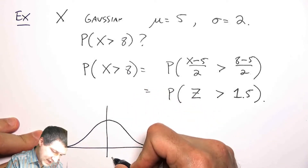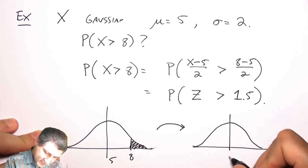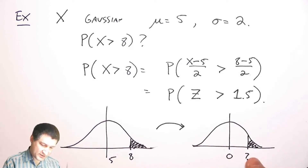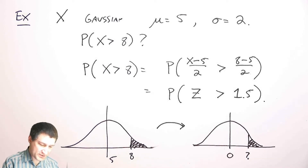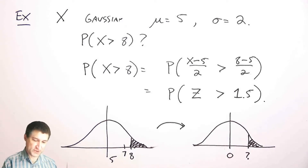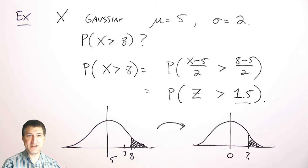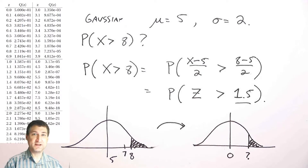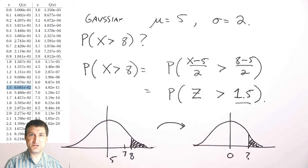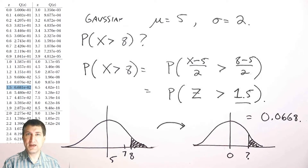It's handy to draw a little picture of what I'm looking for. Here's a Gaussian, and the original problem is how much is left in the tail. I'm converting it to a standard Gaussian and asking what the area under the tail is. Seven is one standard deviation away from the mean, so eight is one and a half standard deviations away — that's where the 1.5 comes from. Looking up z greater than 1.5 in the table gives approximately 0.06, so my answer is about 0.0668.